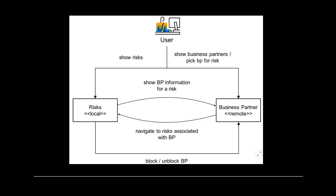Now we will go through the scenario for our application. We have our risk management application created in previous units, which retrieves data from a local database and exposes it via an OData service. The new use case requires showing business partner data in the risk management application — data that resides in an S/4HANA Cloud system. When a user intends to view business partners or pick a BP for risks, a remote service call will be triggered to retrieve the business partner information.